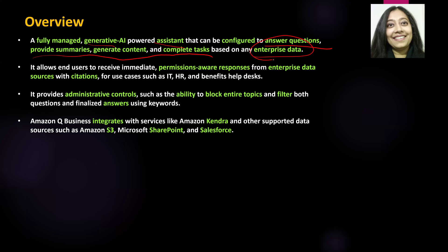This gen AI powered assistant can do all of this very easily. Amazon Q Business also allows end users to receive immediate and permission-aware responses. What do we mean by permission-aware responses? In any enterprise, not everyone has access to everything or all the data that is there — some data is confidential and only a certain set of individuals have access to it.